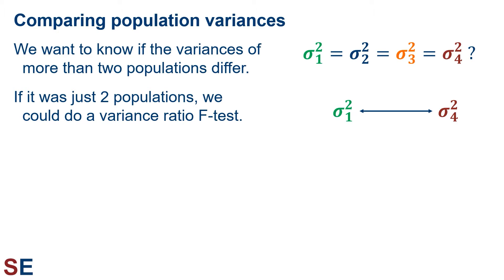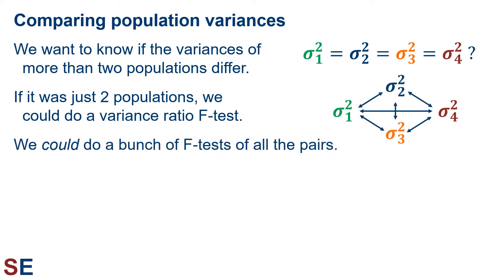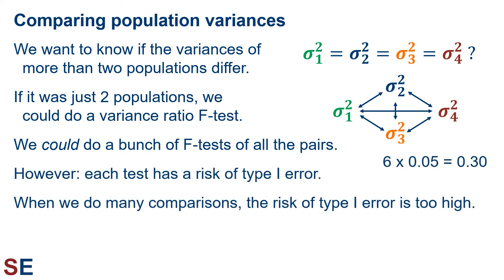Larger test statistic values tend to convince us that the population variances may be different. So in theory, we could do a bunch of F-tests of all the pairs of sample variances taken from our populations. However, each test we do has a risk of type 1 error. For this scenario, if we wanted to compare four populations, we would need to do six F-tests and each has a 0.05 probability of type 1 error. By the time we do them all, we're looking at a 30% chance of making at least one type 1 error. This illustrates a major problem with comparing multiple populations — the overall risk of type 1 error is too high.